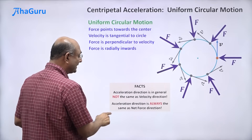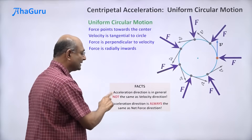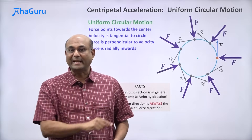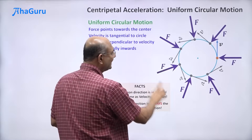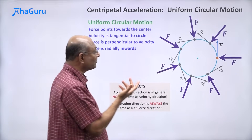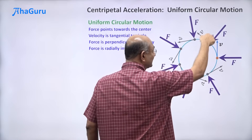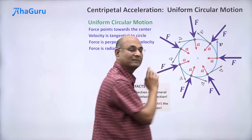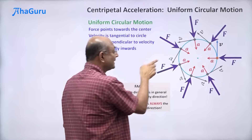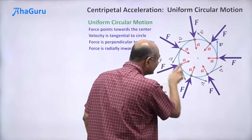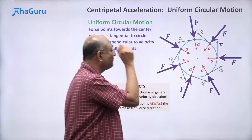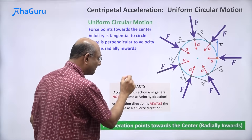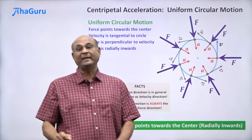Newton's second law guarantees that acceleration direction is always the same as the net force direction: net force equals mass times acceleration. The direction of the net force always matches the direction of the acceleration. We know the net force is pointing towards the center, so the acceleration must also point towards the center at every instant. As the particle moves around, the acceleration direction changes, but it is always pointing towards the center.